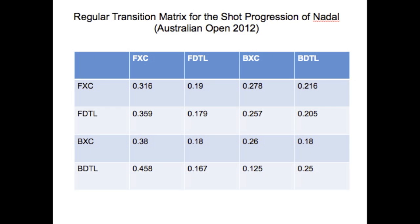Now let's look at the transition matrix for Rafael Nadal. Compare it to the previous two. In comparison, the numbers in all the columns are a lot more even. No one column has much larger values than all the other columns, and this shows a higher diversity of shots that are being hit.